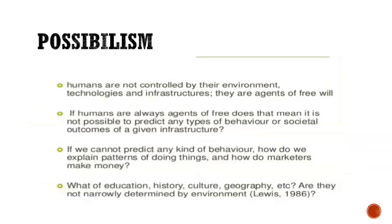Education, history, culture, and geography — are they narrowly determined by environment? If the environment controlled everything, all people would learn the same traditions and norms. But we know that history is different everywhere, culture is different, and the geography of every country and region is different. So we cannot say that environment alone determines all these things — this is the argument against environmental determinism.